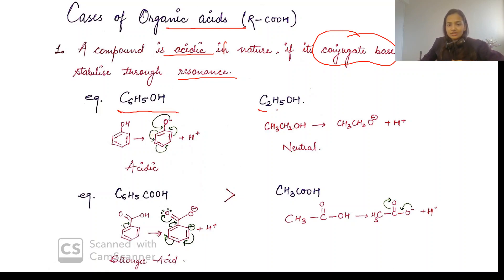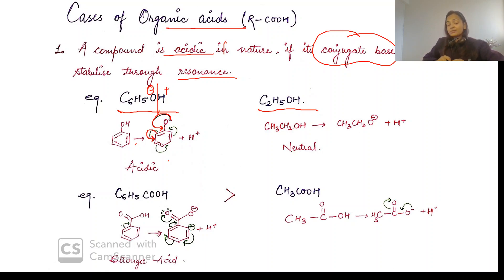Let's take an example. This is phenol. In phenol, we have a polar O-H proton. When it loses that proton it forms the conjugate base known as phenoxide. The negative charge on phenoxide is resonance stabilized because it undergoes resonance with the benzene ring.